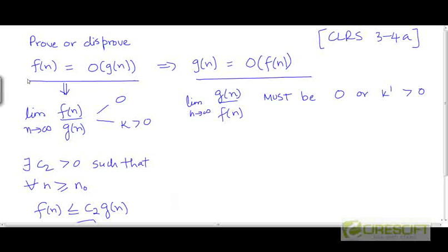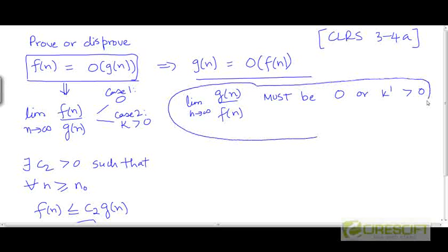Just from this information, either of these two is possible. This is case 1, this is case 2. Now, if this implication holds, then for both these cases, the ratio of the functions in the limit n tending to infinity must be 0 or some positive constant k'.